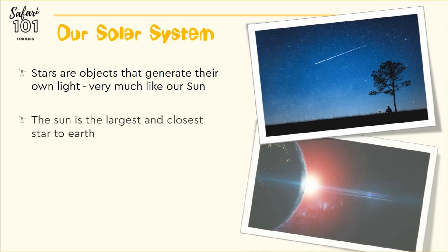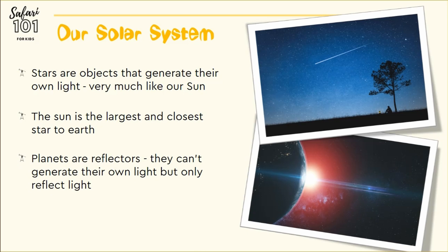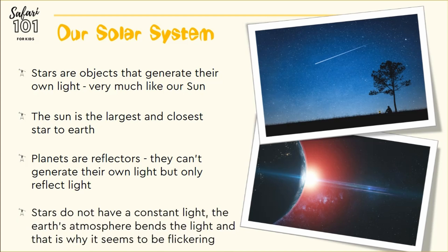The sun is the largest and closest star to Earth. Planets, on the other hand, are reflectors. They can't generate their own light like stars, but they reflect light. When you see a planet in the night sky, it has a constant light because they are reflecting light. Stars, on the other hand, do not have a constant light because they generate their own light. The Earth's atmosphere bends the light, and that is why stars seem to be flickering.